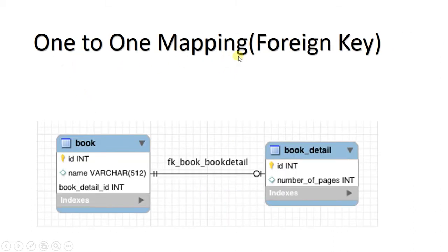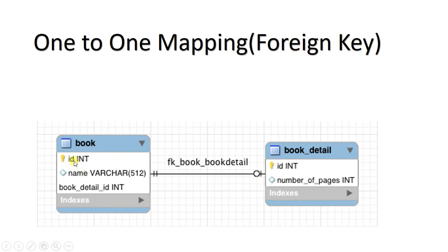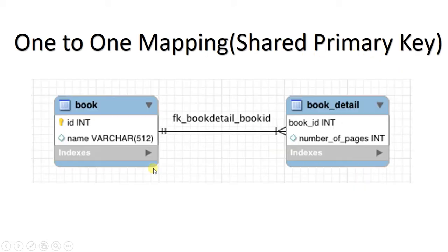The other type is one-to-one mapping with a foreign key. In the previous case we shared the primary key without explicitly creating a foreign key column. In one-to-one mapping using a foreign key, we have a primary key 'id' and a 'name' in the book table, and this primary key has a corresponding foreign key also named 'id' in book_detail, which holds the number of pages. The difference is: shared primary key shares the key without a separate foreign key, whereas foreign key mapping creates an explicit foreign key with the same name.